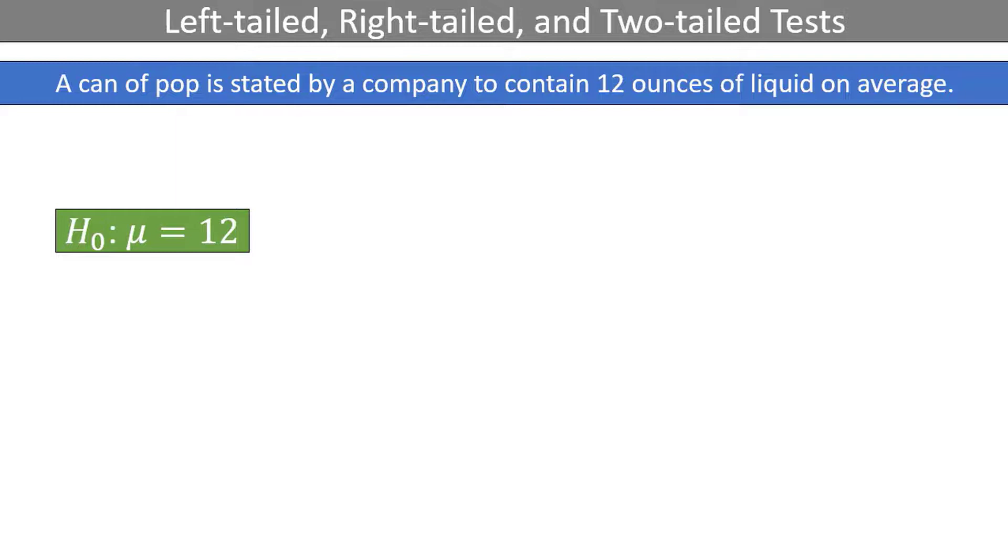You think the company is being dishonest, and that, really, there are less than 12 ounces of liquid in each can. The alternative hypothesis, the claim that you would like to prove with data, is that mu is less than 12.